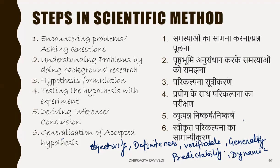Then only will it be called a scientific method. Generality means the results or conclusions derived from the scientific method show a marked characteristic of generality — those results can be generalized for the masses. Predictability means it can be used to predict what will happen in the future. Finally, modifiability and dynamicity — it must be dynamic, meaning it should change itself as per the situation and requirement.